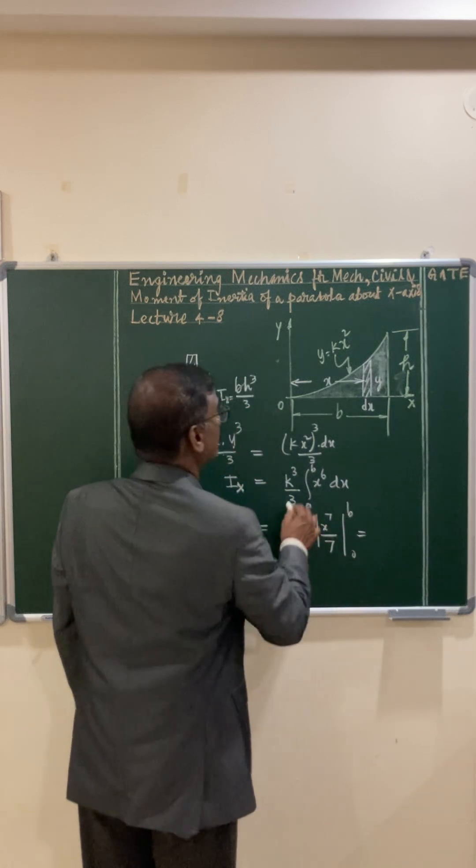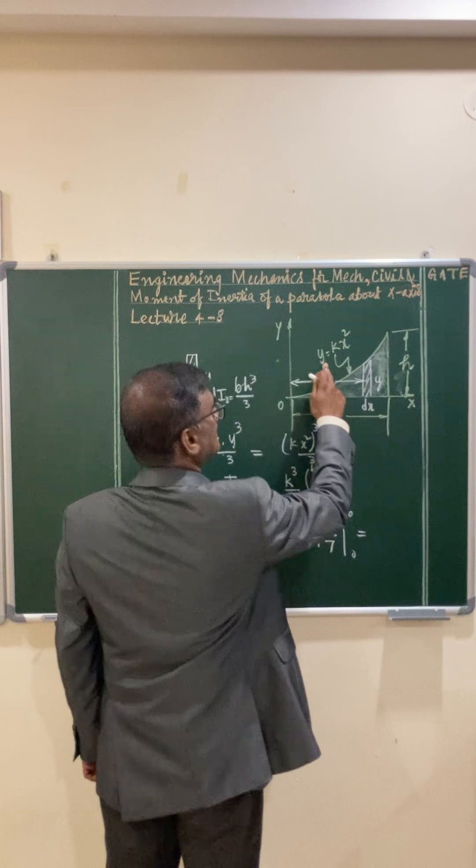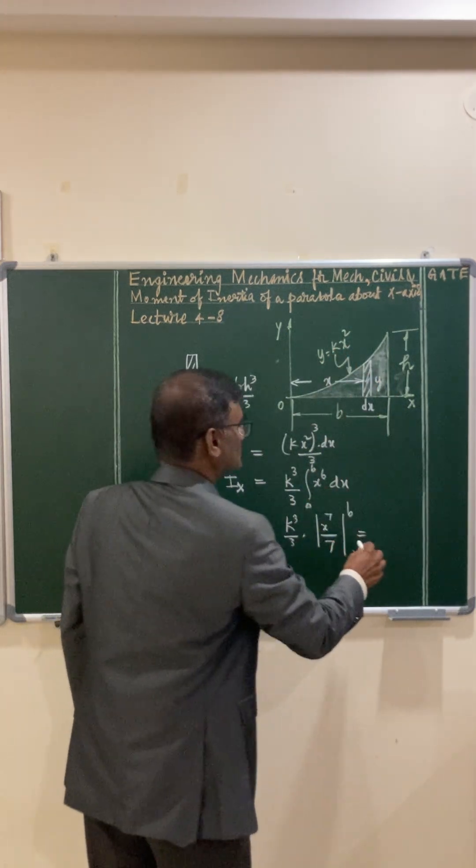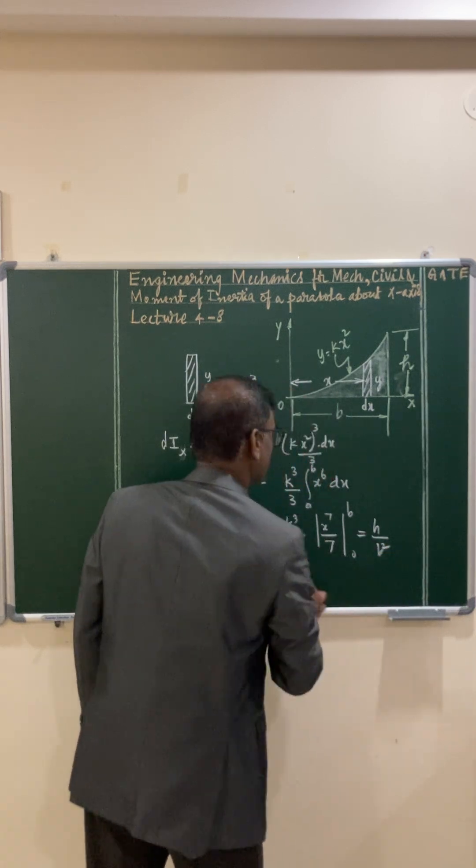So this becomes, k value is, as you know that at y value h, x value is b. So k equals h/b². h/b² is the k value.